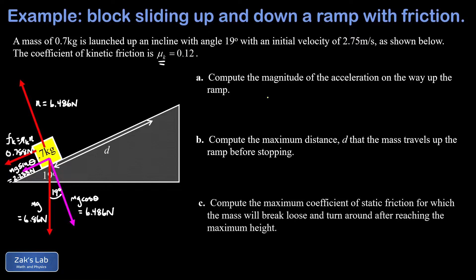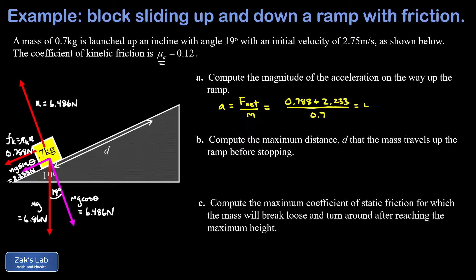That completes the force analysis on the way up the ramp. We want the magnitude of the acceleration on the way up — all forces point down the ramp, so that's the direction of acceleration. Using down the ramp as positive and applying Newton's second law, A equals F_net over m: friction force 0.788 newtons plus parallel gravity 2.233 newtons, divided by mass 0.7 kilograms. To three significant digits, the magnitude of acceleration is about 4.32 meters per second squared.